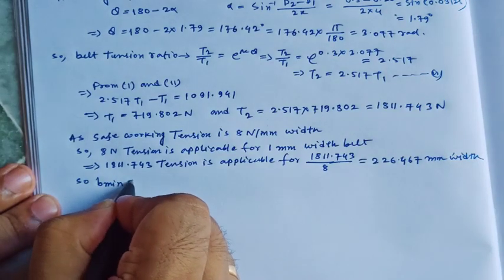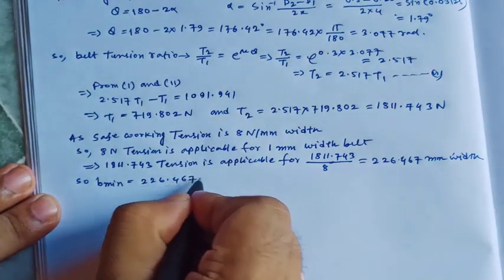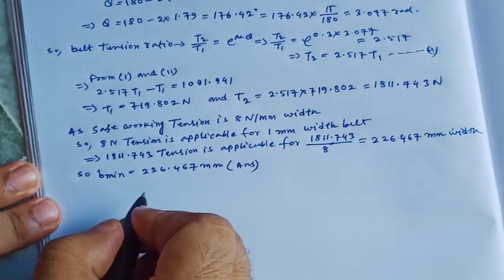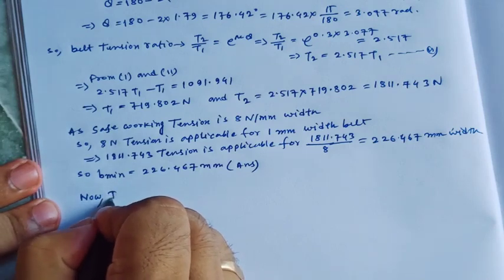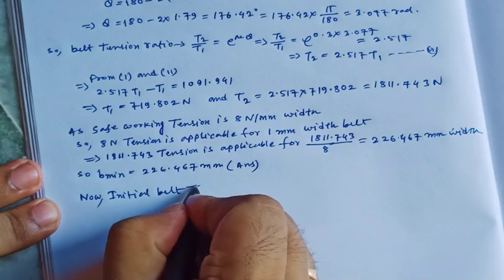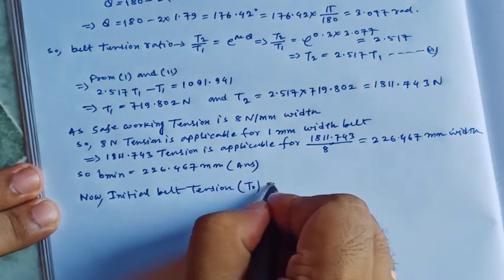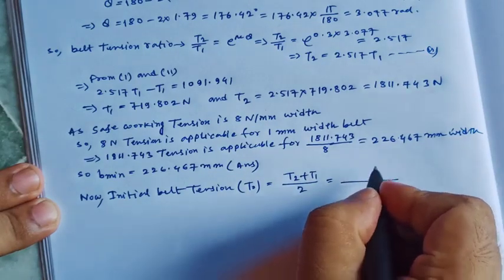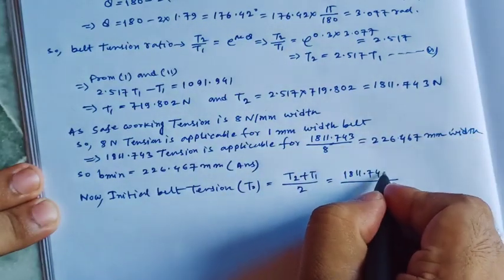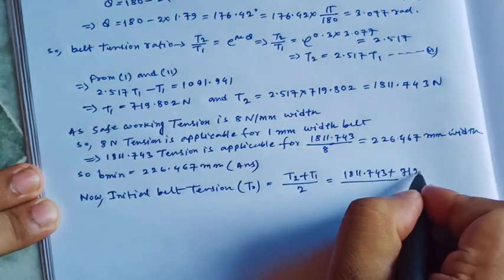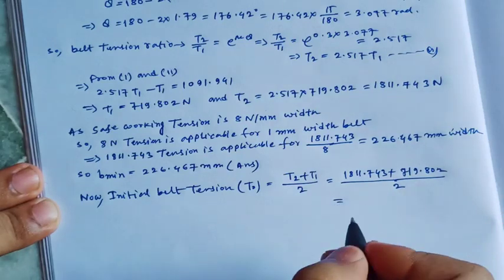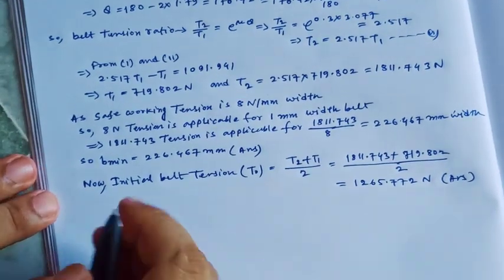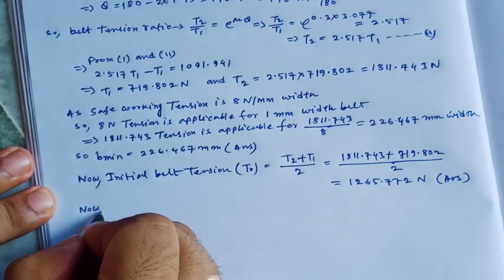So the minimum belt width B_minimum equals 226.467 millimeter. Now, the initial belt tension T0, which is the average of T1 and T2, equals (T2 + T1) divided by 2 = (1811.743 + 719.802) divided by 2, which gives 1265.772 Newton.